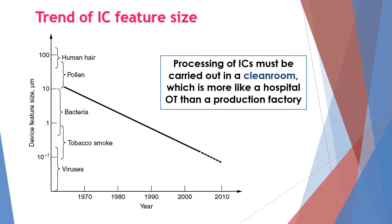Over the years, the size of IC features has already been reduced tremendously. In the 1970s, the size of the product was around 10 micrometers or so. Moving into 2000, it goes beyond the size of a virus. That's why we need to process the IC in the clean room. This clean room is more like a hospital operation theater rather than a production factory.